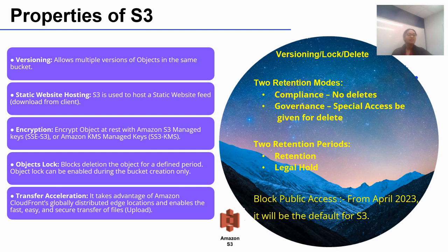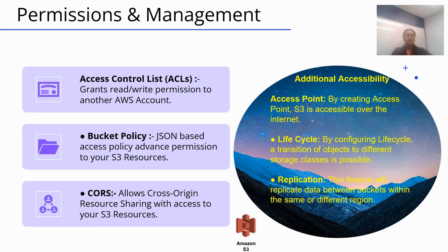S3 supports various auditing and compliance requirements. It has two retention models and two retention periods as per the Block Public Access, or BPA. Many Amazon tools and services use S3 as storage. Permission grants allowed from other accounts through the access control list. Each bucket has its own access policy called the bucket policy, and each user's bucket data access follows its own policy. It supports lifecycle and replication, high availability, and access point policies.